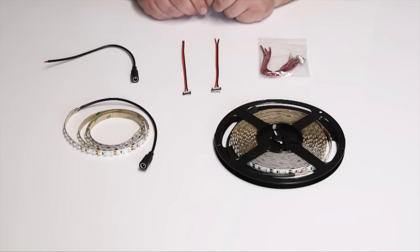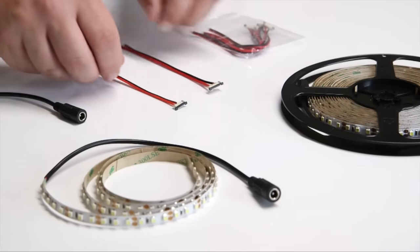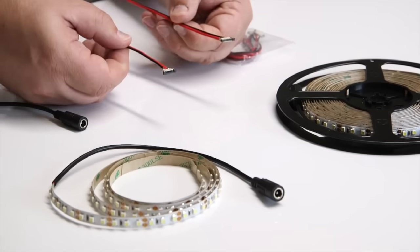There are two ways to make additional connections to the strip when you no longer have the pre-fitted input socket to make use of. You can either use a clip-on connector or make soldered joints.